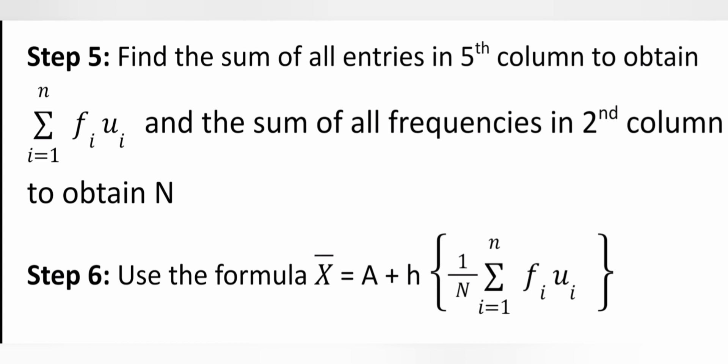Step 5: Find the sum of all entries in the fifth column to obtain sigma (i=1 to n) fi·ui, and the sum of all frequencies in the second column to obtain n. Step 6: Use the formula x-bar equal to a plus h into (1/n) into sigma (i=1 to n) fi·ui.